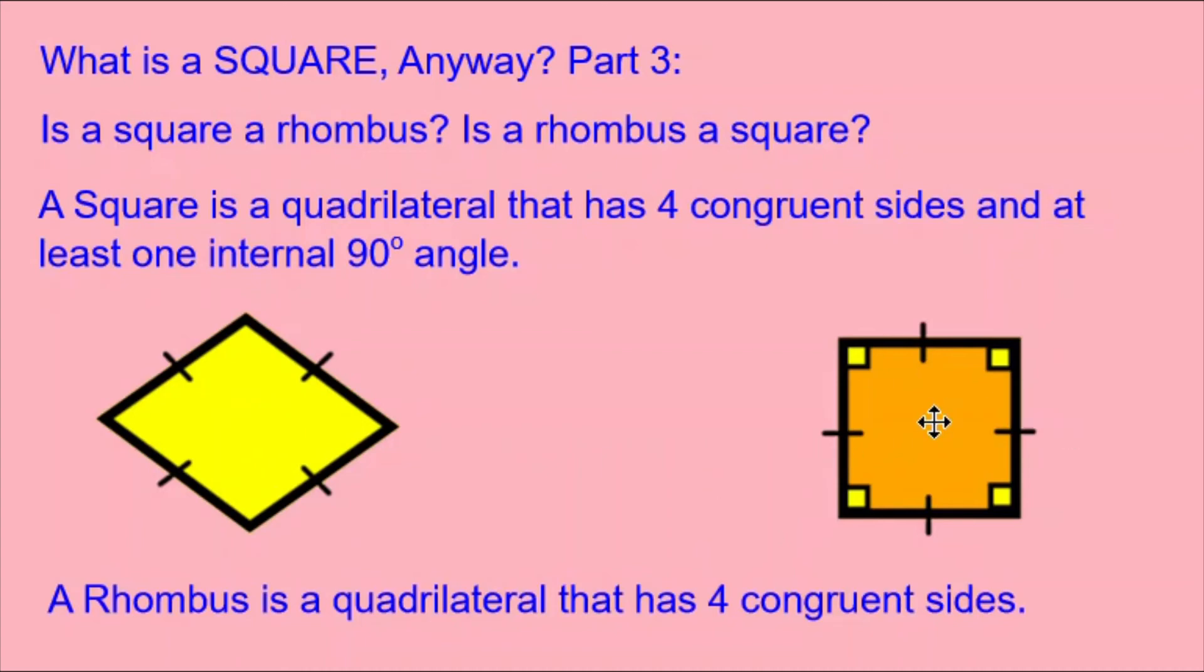So now we know the answer to these questions. A square is actually also a rhombus. But a rhombus is not necessarily also a square. It will only be a square if it happens to have the internal 90 degree angles.